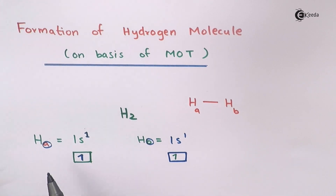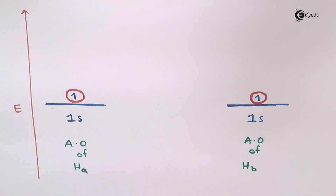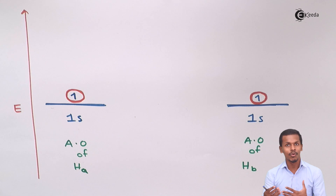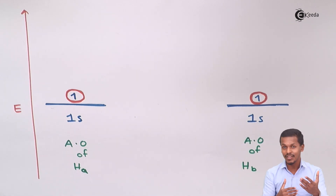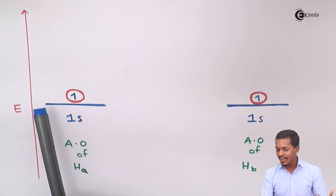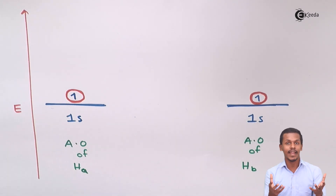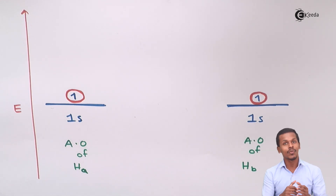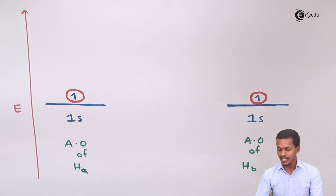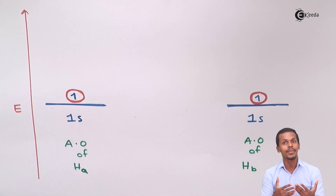I have made separate electronic configurations for both atoms. Now we have to combine them. So far we have only discussed the atomic orbitals. Whenever these two atomic orbitals combine with each other, they will form molecular orbitals of different energy levels. The atomic orbitals have the same energy, but when they combine they separate into two energy levels — that is what we observe when these two combine to form the molecular orbital.